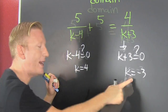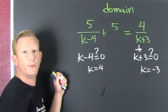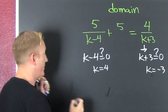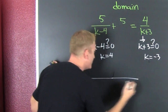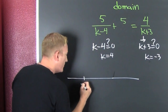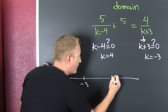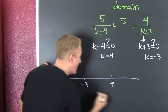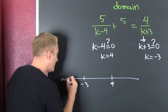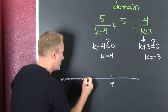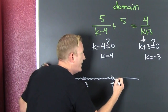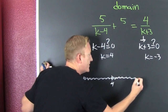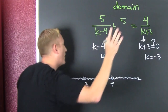So how do we write it? We could do it in interval notation. If we did it in interval notation, we'd put minus three there and four there. Everything except those two points is good — minus three and four are the bad values.